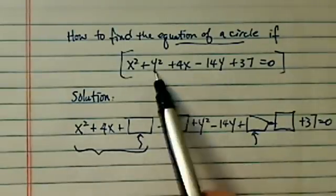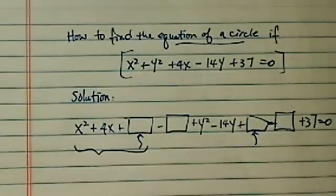x squared, 4x, y squared, negative 14y, 37. It's all there.